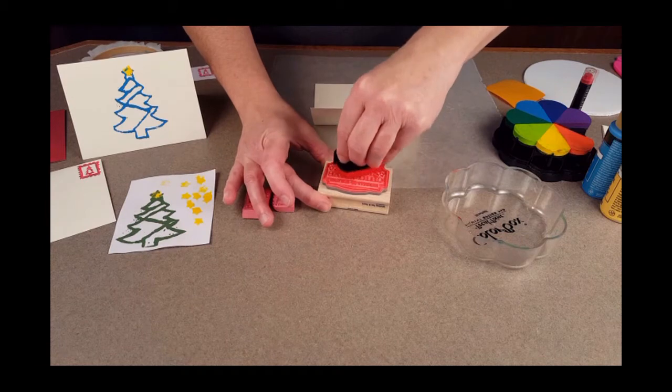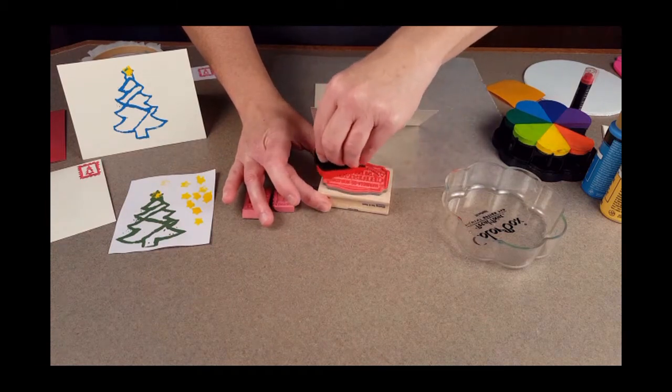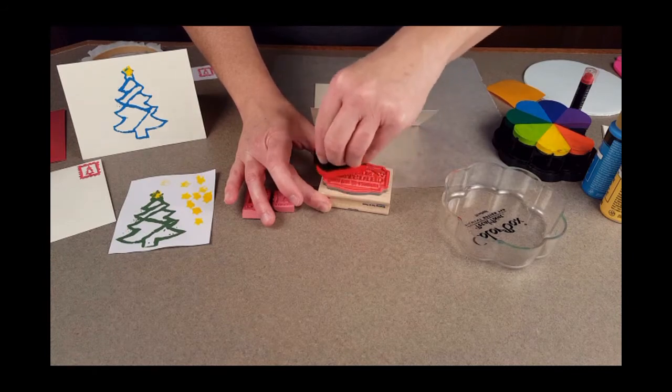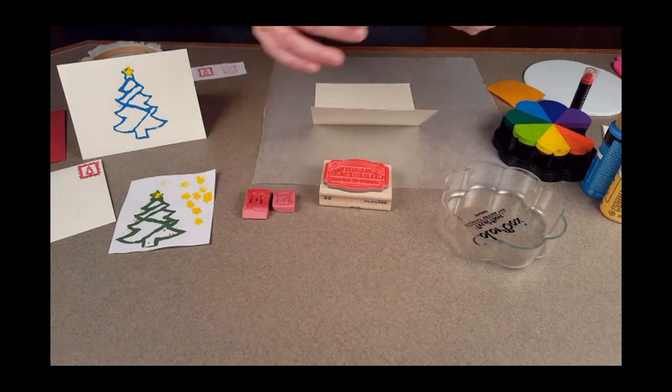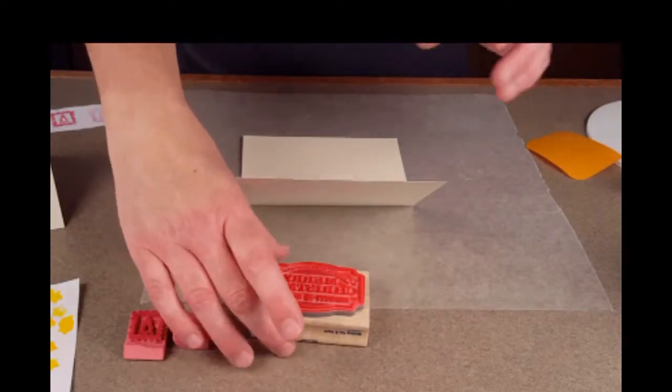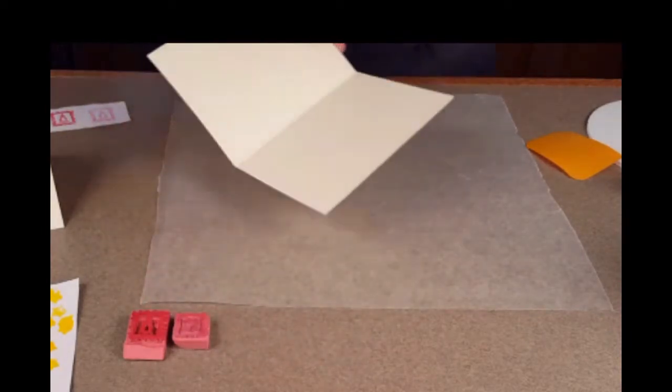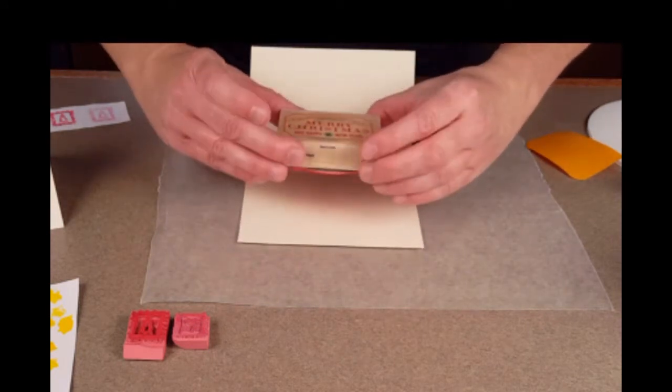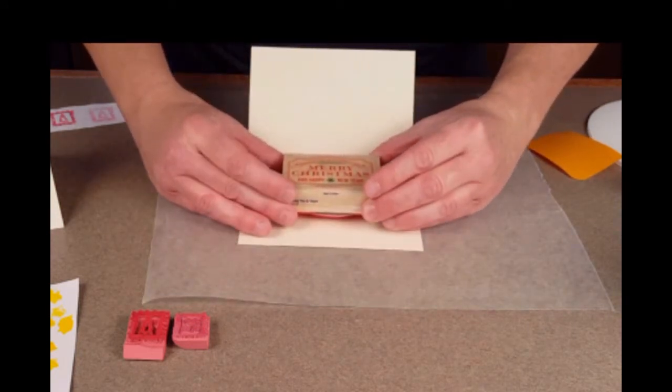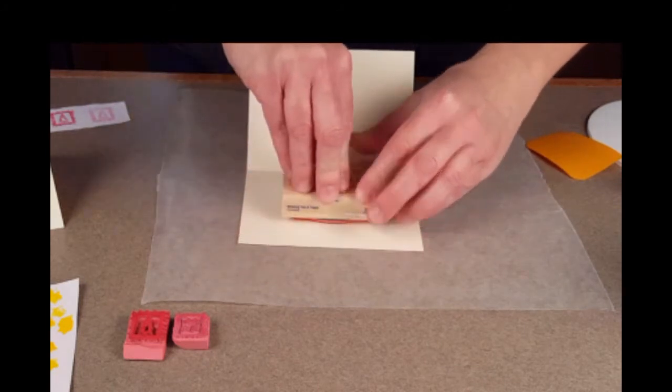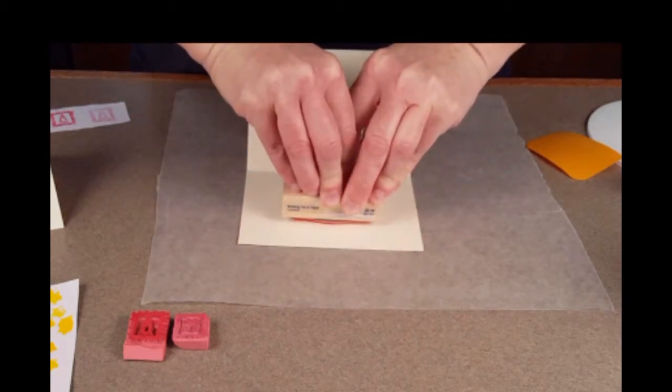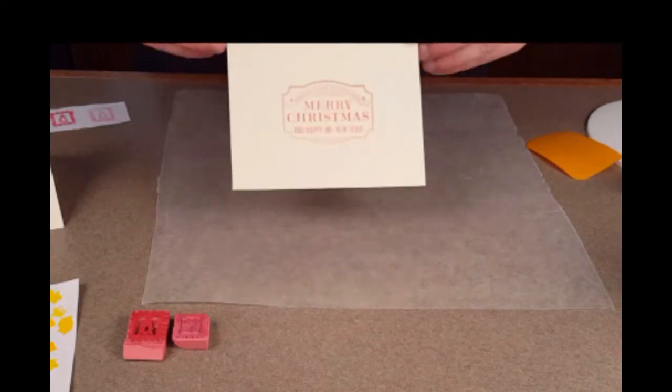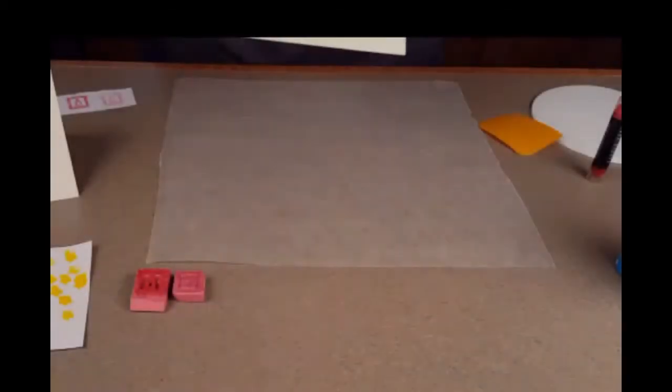I'm going to take red ink and go across evenly to cover the whole surface of my stamp. I'll center that inside my card where I want it for signatures, put it down with a nice firm pressing, lifting up to stamp the inside with a nice greeting.